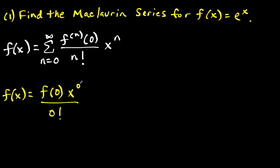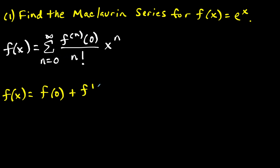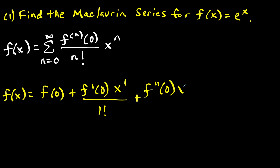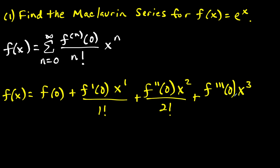Then we have x to the zero over zero factorial. Be mindful that x to the zero is equal to one, and zero factorial is also equal to one. So we could just start with f of zero. When we plug in n equals one, we have the first derivative at zero — f prime of zero — times x to the first over one factorial. Then for n equals two, f double prime of zero times x squared over two factorial. And for the third derivative, times x to the third over three factorial. The pattern is going to be obvious, so we don't have to keep going.